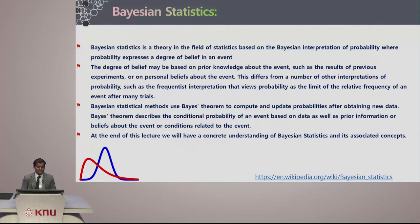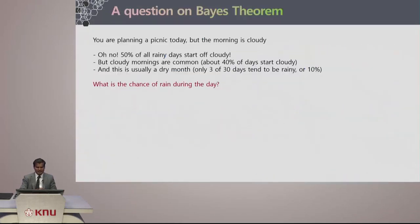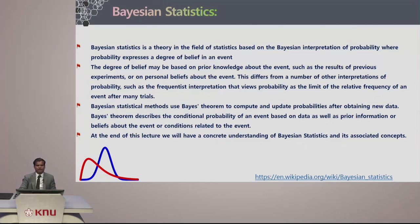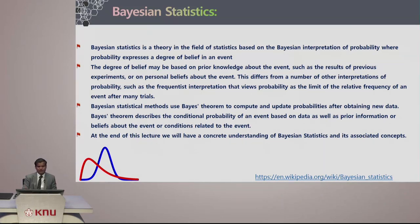In the previous example, we saw that the degree of belief was that 1 percent of the population has the allergy, but we believe 80 percent of tests show accurately positive — yet there is still a 10 percent false positive rate. Based on certain belief of an event, we proceed to find the actual probability by means of certain interpretations and experiments. Such interpretations can also be done using frequentist interpretation — how frequently things happen and how we can infer from conditional probabilities or events.